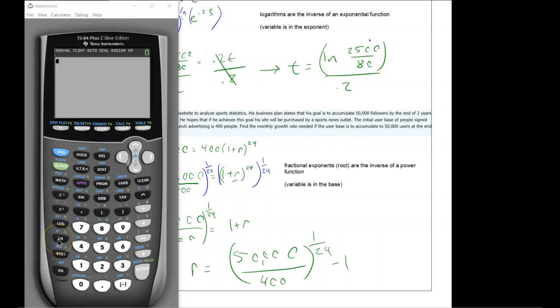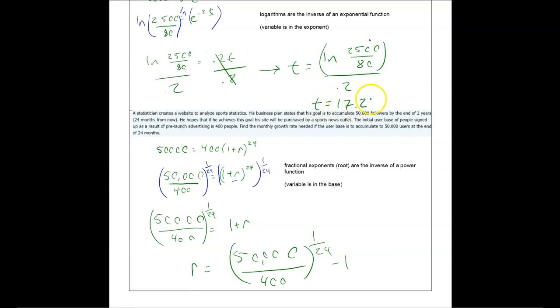I'm going to go log of the fraction, and then close my parentheses and divide by that 0.2. And I get 17.21 years. And then same down below.